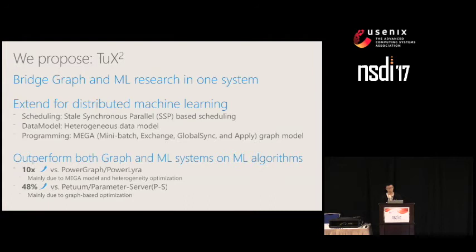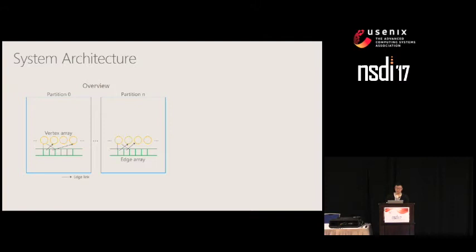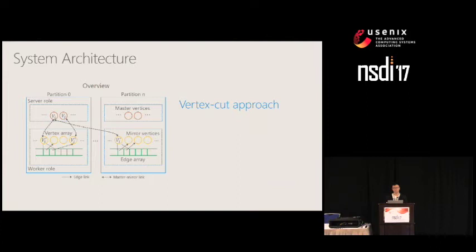Before discussing system design details, I will introduce the system architecture of TAPS2. A graph is partitioned into N partitions, and each server typically owns one partition. In each partition, TAPS2 maintains vertices and edges in separate arrays, with edges grouped by source vertex. TAPS2 adopts the vertex cut approach, where the edge set of high-degree vertices can be split into multiple partitions. Each partition maintains a replica of a vertex, and one replica is designated as the master vertex, maintaining the master version of vertex data.